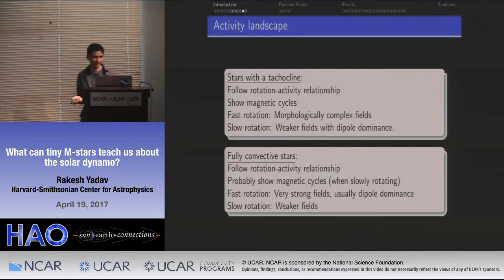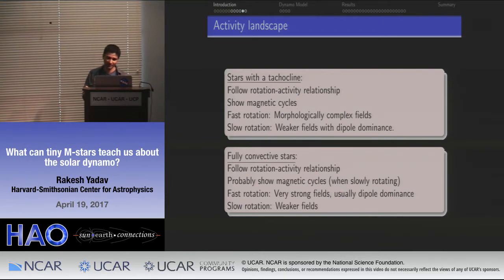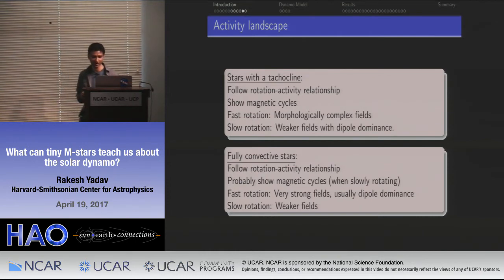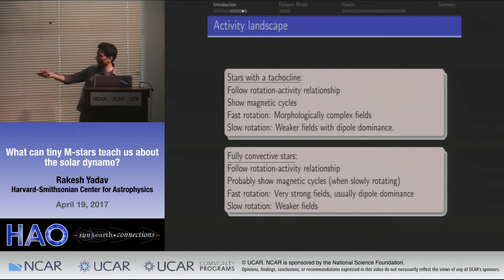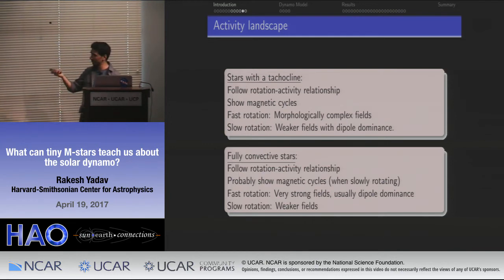In summary, stars with and without a tachocline follow the same rotation-activity relationship. Both types of stars can show magnetic cycles. Stars with a tachocline seem to show more complex magnetic fields, while fully convective stars have more axisymmetric and very strong fields. When stars become older or rotate more slowly, magnetic fields become weaker and probably dipole-dominated, as seen in the Sun. There are a lot of constraints we need to satisfy for a cohesive theory of stellar dynamos.